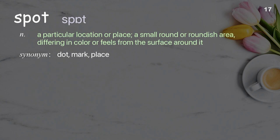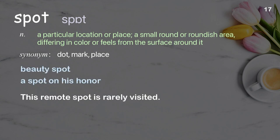Spot: a particular location or place; a small round or roundish area differing in color or feel from the surface around it. Examples: beauty spot, a spot on his honor. This remote spot is rarely visited.